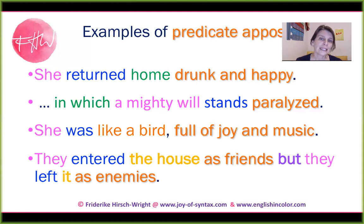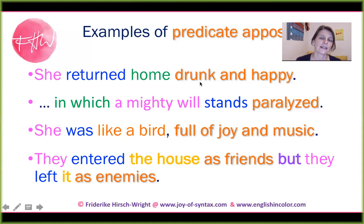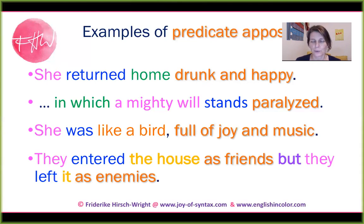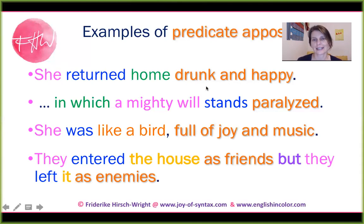Just notice that 'drunk and happy' is an element that's not obligatory — the clause would be complete without it. Syntactically speaking, 'she returned home' is a complete clause, but this predicative positive gives a two-for-one option: I can predicate something about the subject without adding another clause. In a way it's a second predicate that looks like a clause element.